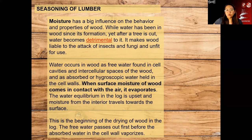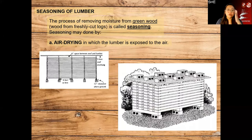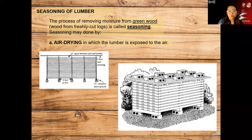Regarding seasoning of lumber: moisture has a big influence on the behavior of wood. Wood naturally contains water. When it's cold, wood expands; when it's hot, it shrinks. There is a process for removing moisture from green woods — freshly cut logs. This process is called seasoning.